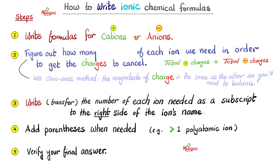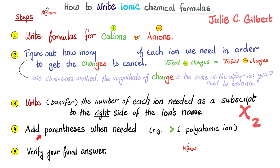Here is the first topic: how to write ionic chemical formulas. Step one: write the formula for the cation and the anion. Step two: figure out how many of each ion you need to get the charges to cancel — total positive charges must equal total negative charges. You can use the crisscross method. Step three: put the needed number as a subscript to the right of the ion's symbol. Step four: add parentheses when needed and verify your answer.